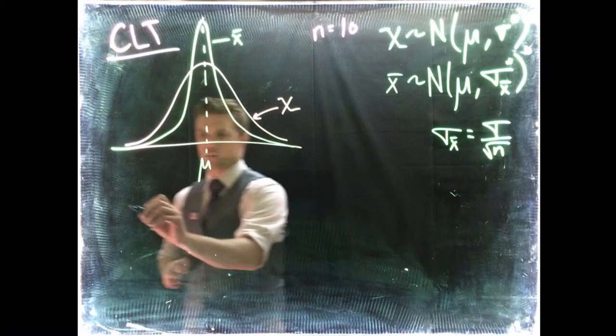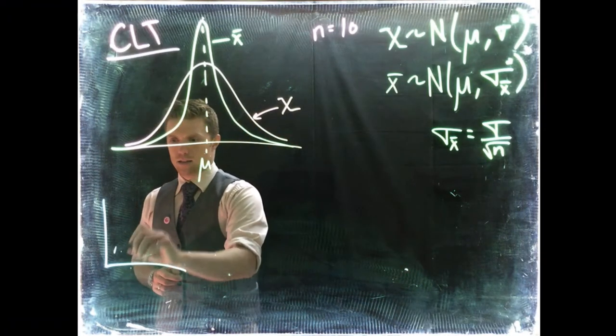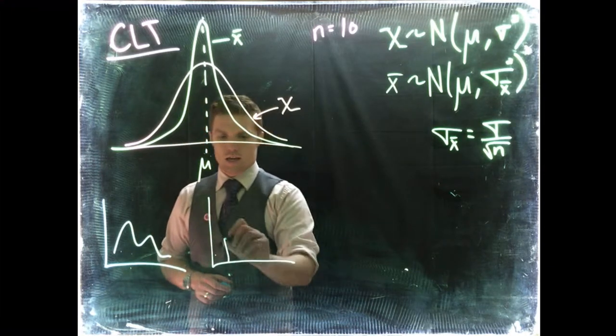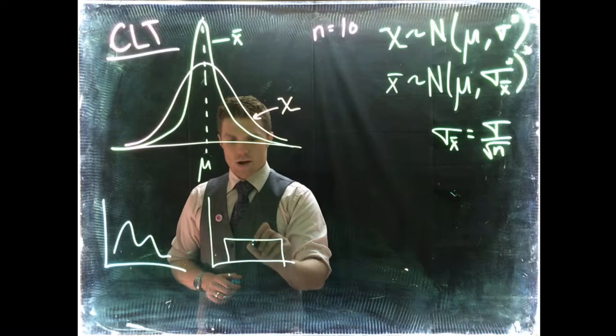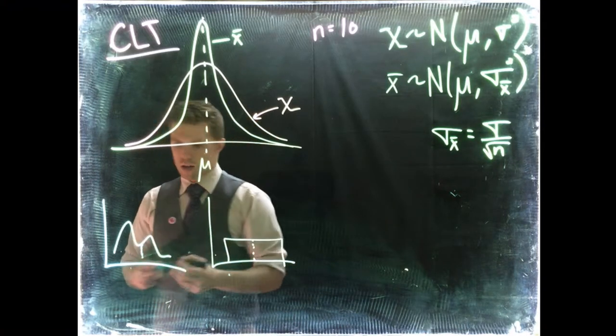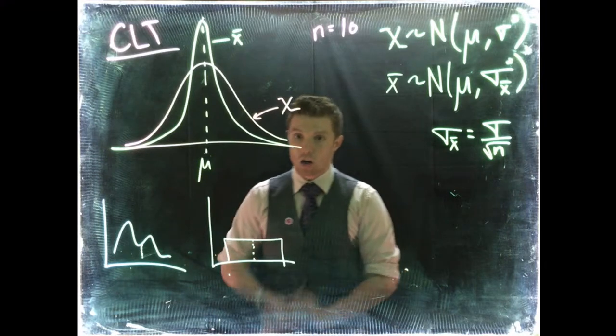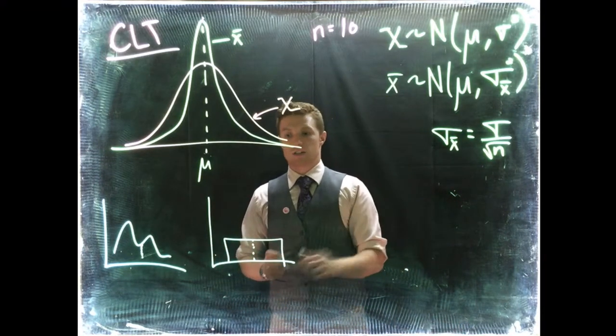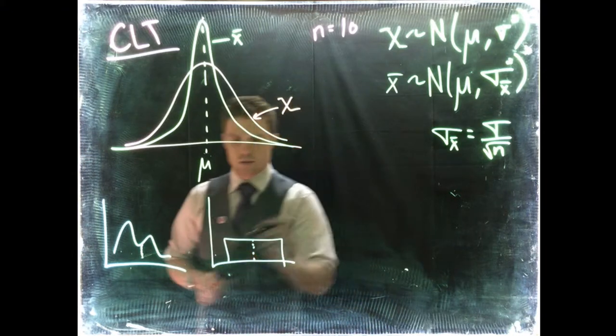Our population distribution could look like some squiggly thing like this. It could look like a uniform. But wherever that mean is, if we take a large enough sample size, that's the key thing. If our sample size is large enough...